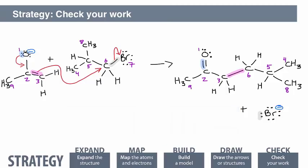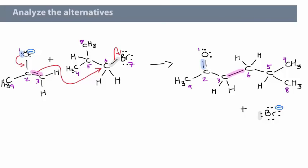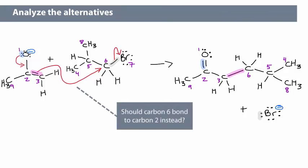After doing all this work, we have arrived at the final products, and we can be confident that our answer is correct. But wait, we're not quite done. Remember when that C2-C3 bond broke? Why didn't the new bond form between C2 and C6 instead of C3 and C6?